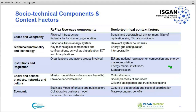With respect to institutions and regulations, EU and national legislation on competition, energy market regulations, unbundling, energy market institutions, and standardization are important. For the socio-political dimension, cultural norms, social practices of end users — sometimes referred to as user behavior — and citizens' acceptance and trust of institutions matter. Finally, the economic dimension is important: the culture of cooperation, high costs of coordination, microeconomic factors, and macroeconomic benefits for the whole economy.